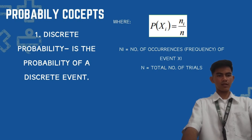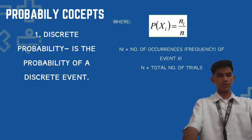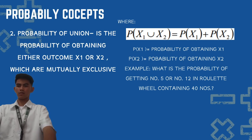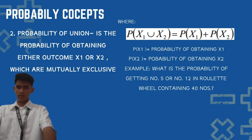The first probability type is discrete probability — the probability of a discrete event — with the formula P(X-sub-i) equals N-sub-i over N, where N-sub-i is the number of occurrences of the event and N is the total number of trials. Next is the probability of a union: the probability of obtaining either outcome X-sub-1 or X-sub-2 (mutually exclusive) is P(X-sub-1 ∪ X-sub-2) equals P(X-sub-1) plus P(X-sub-2).